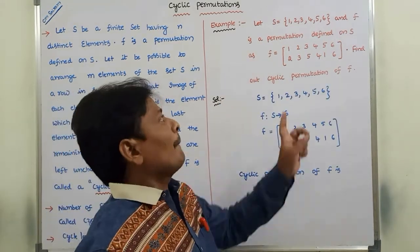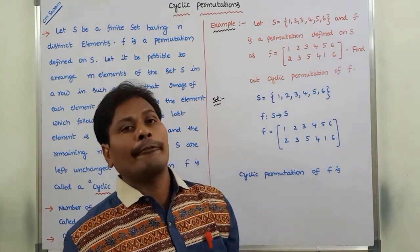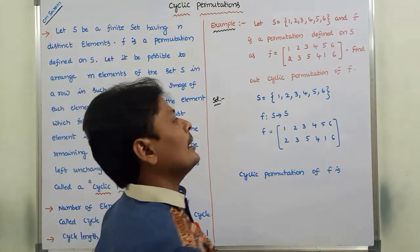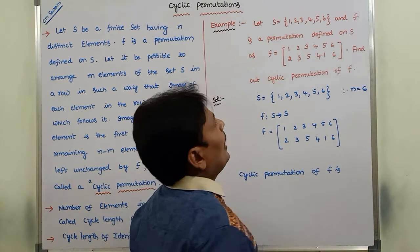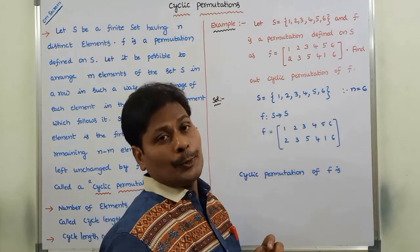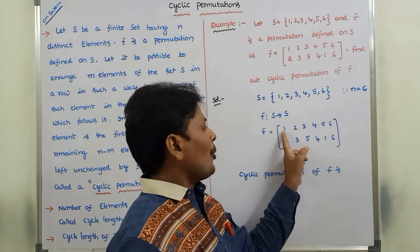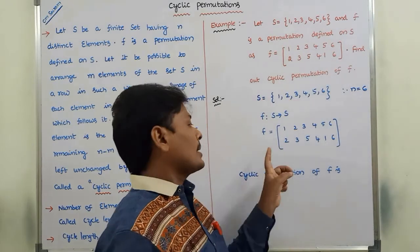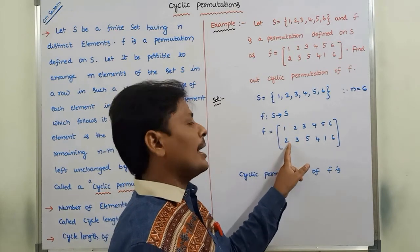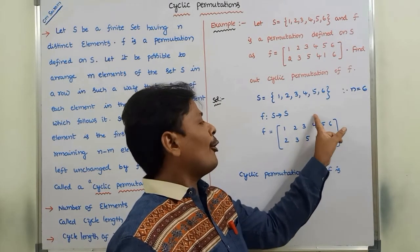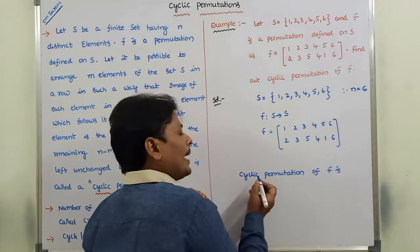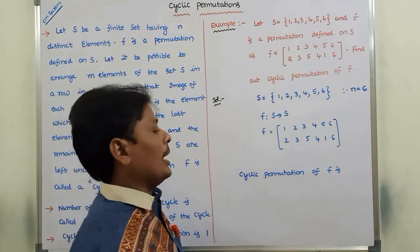Now we can go to an example. Let F be the set {1, 2, 3, 4, 5, 6}, so F is a finite set with 6 elements and n equals 6. The permutation F is a function mapping from F to F. The first row contains all elements of set F and the second row contains their images: 1's image is 2, 2's image is 3, 3's image is 5, 4's image is 4, 5's image is 1, and 6's image is 6. Now find the cyclic permutation of F.